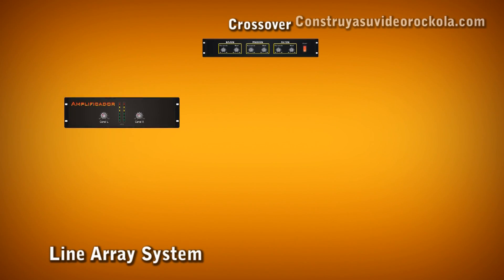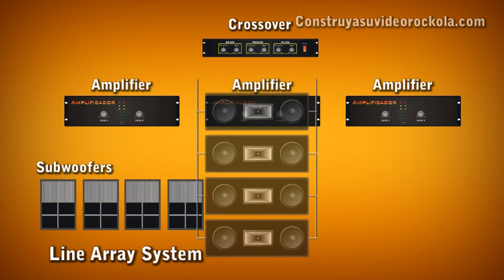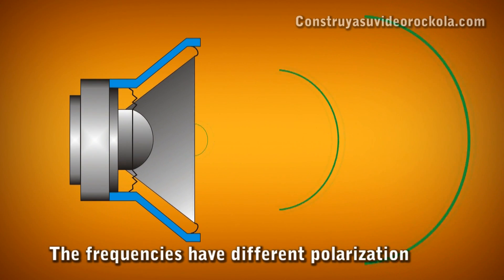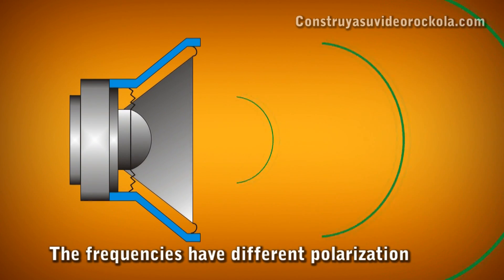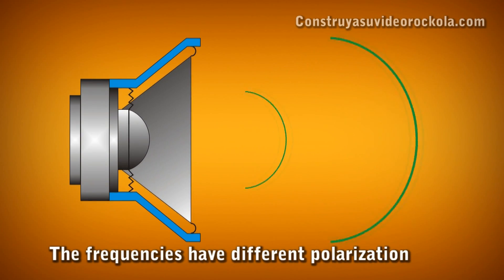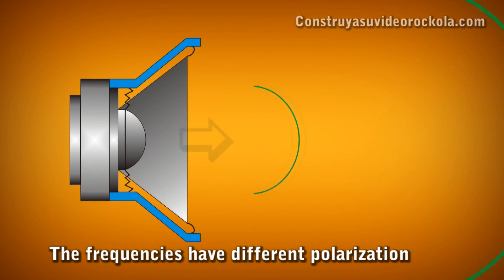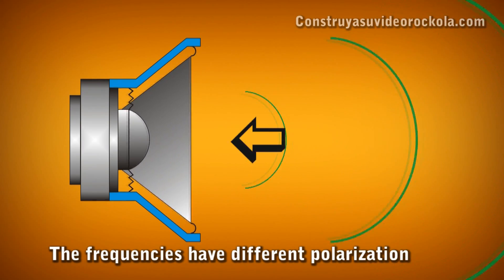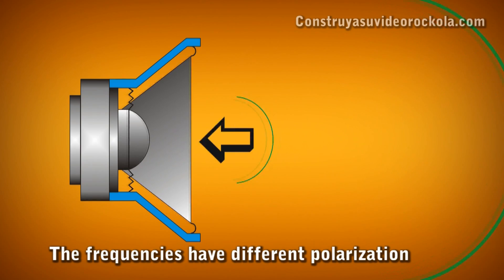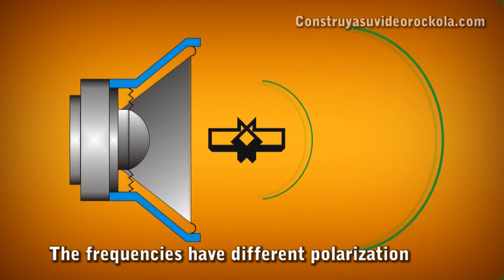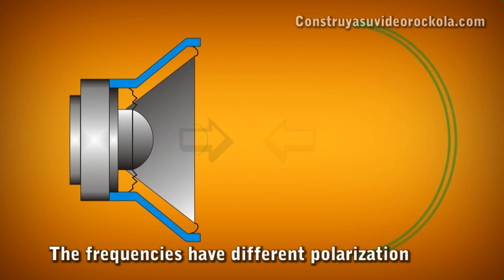A very effective way to improve sound fidelity at high potency is dividing the frequencies for each speaker. The frequencies have different polarizations according to their amplitude. When the speaker pushes out to play a low frequency, there may be a medium or high frequency forcing the speaker to go inward, causing movements which do not allow it to emit either frequency perfectly.